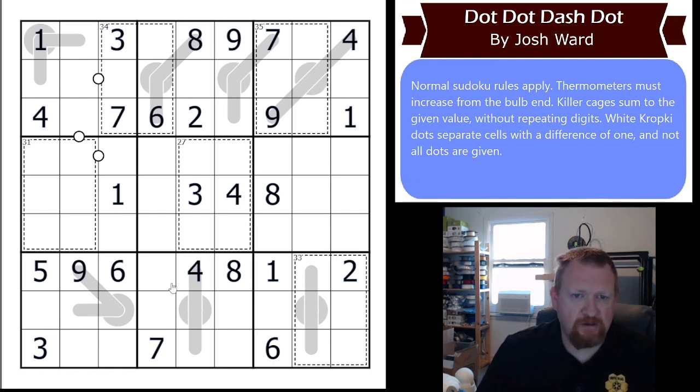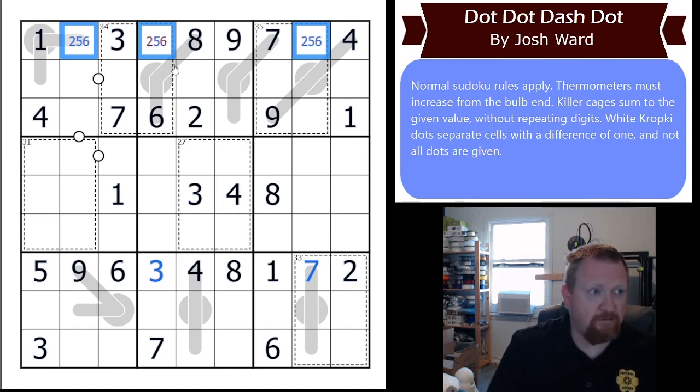So, row 7 is the logical place to start, with only two digits missing. The 7 has to go in box 9, which means that the 3 goes in this box. We can start on row 1 now. It needs a 2, 5, and 6. We can put those in here, 2, 5, and 6. The only value that's possible here is a 5, which leaves a 2, 6 pair in those boxes.